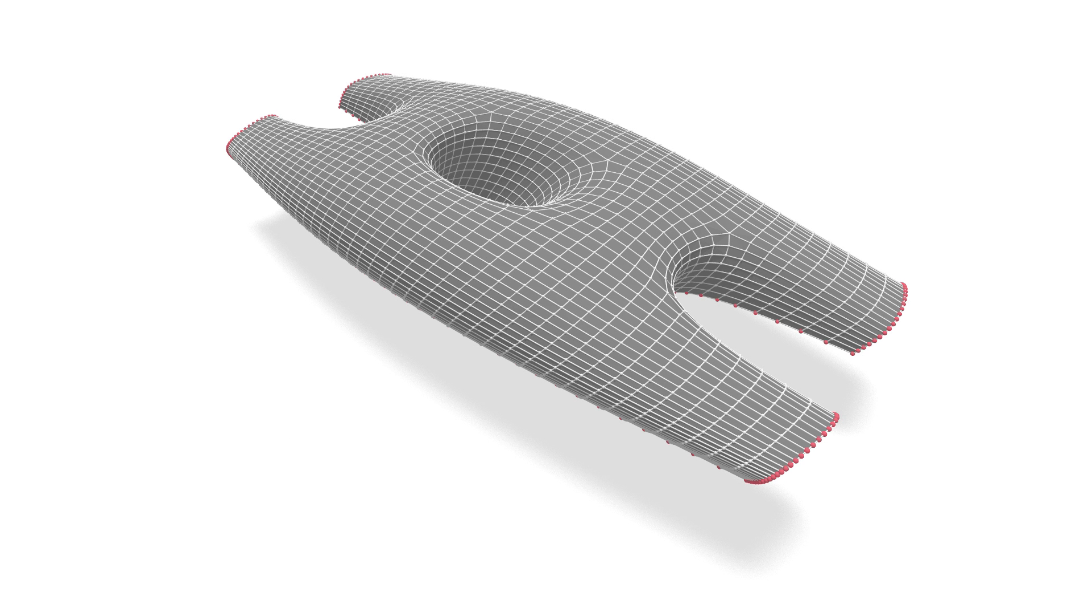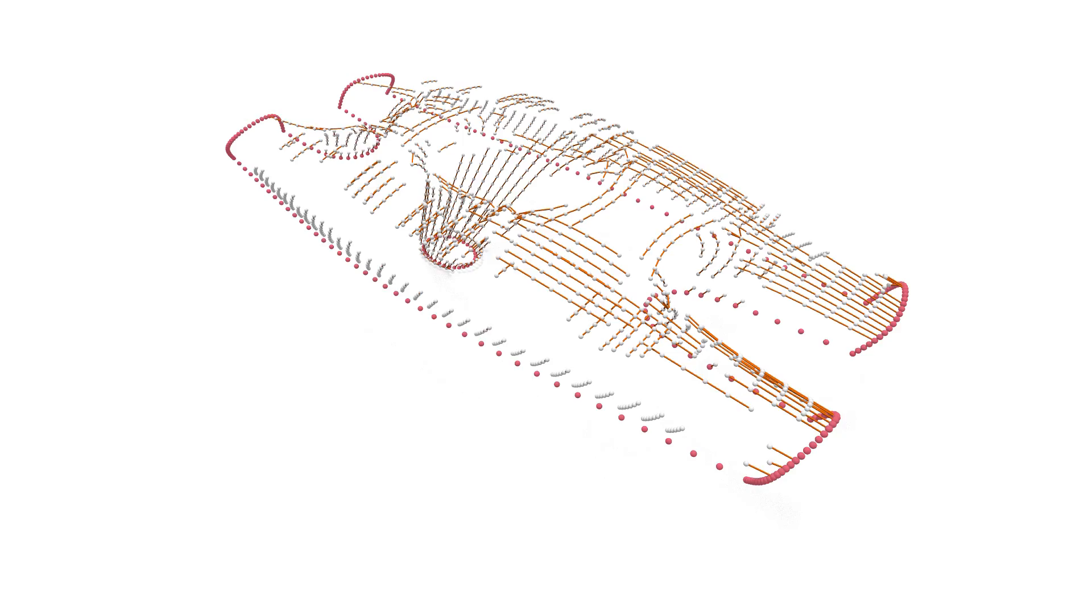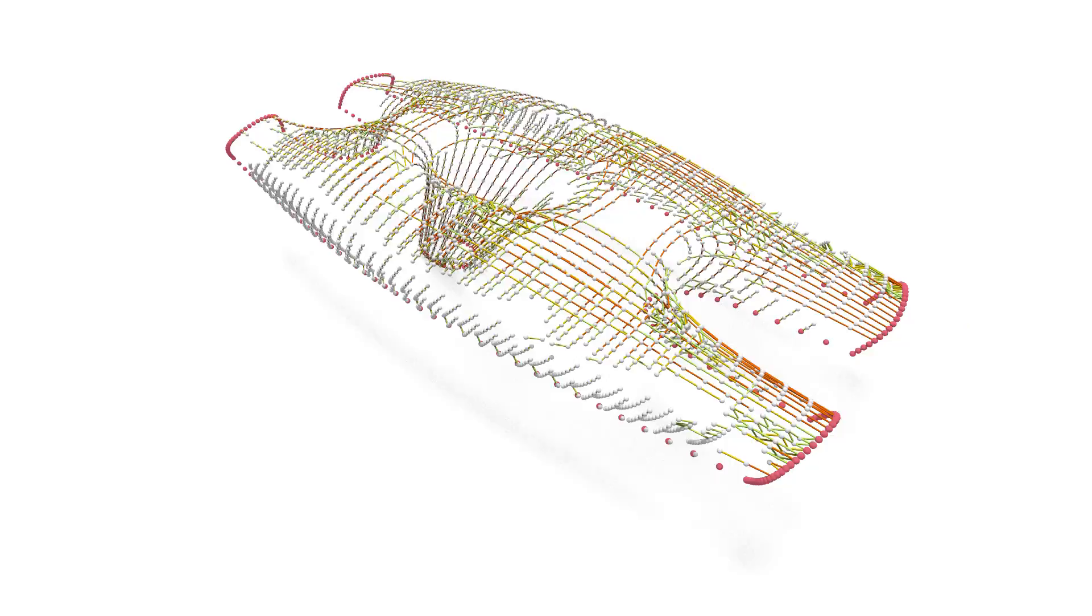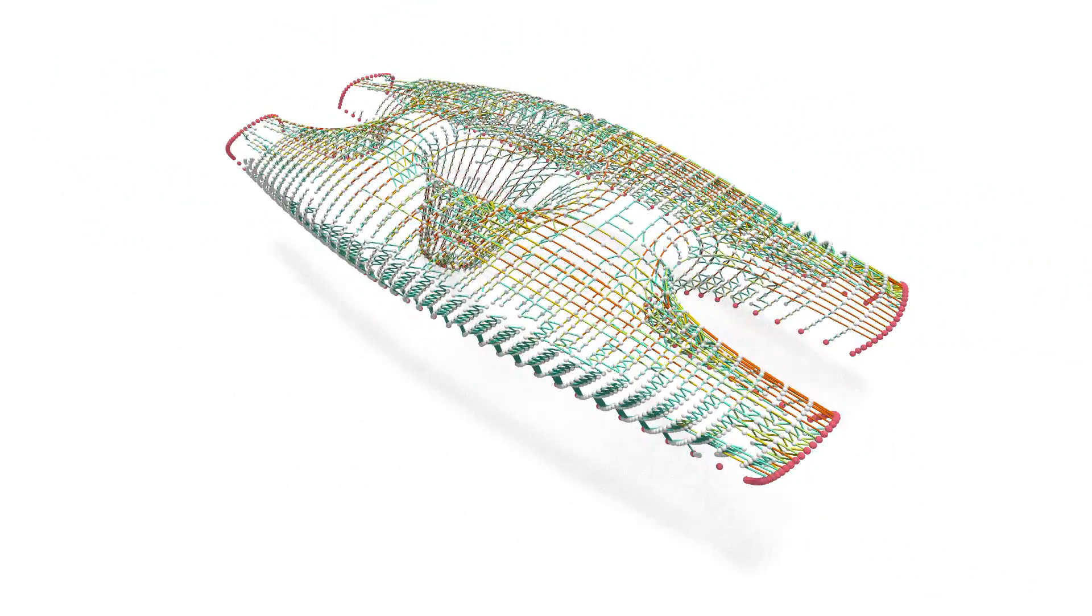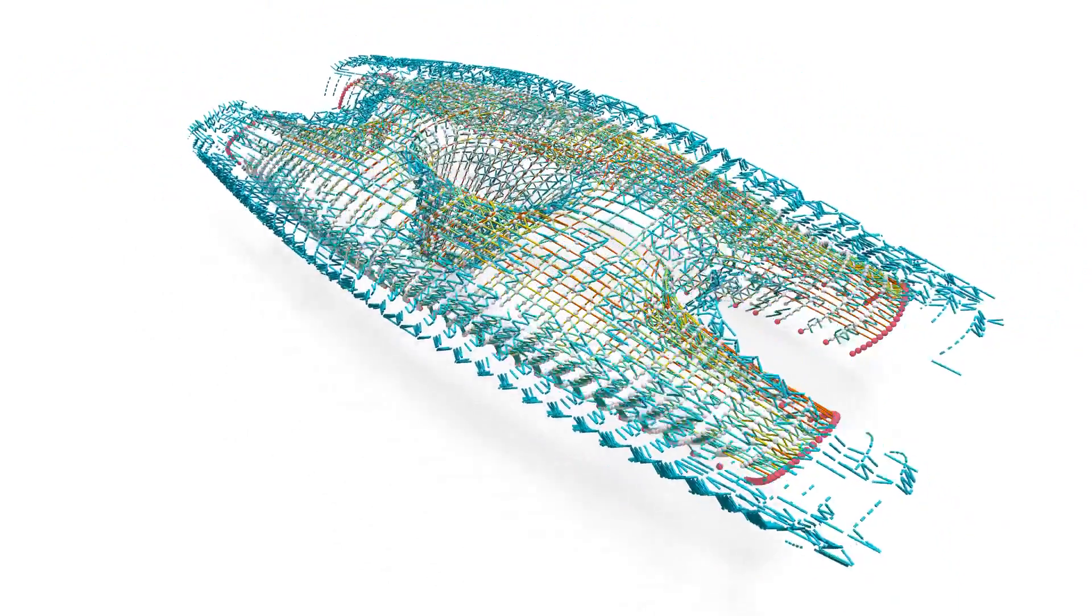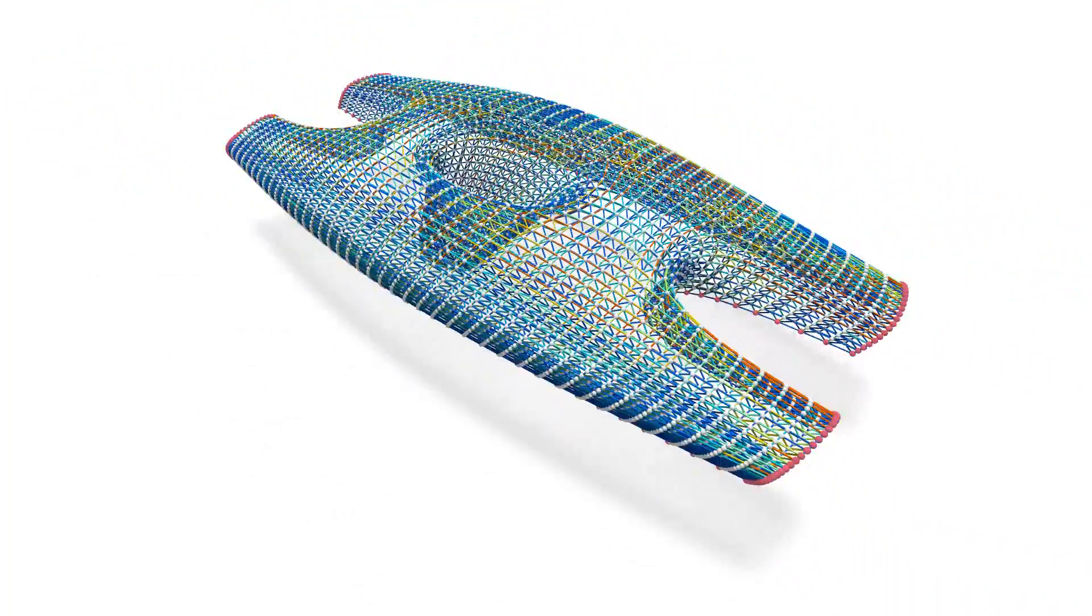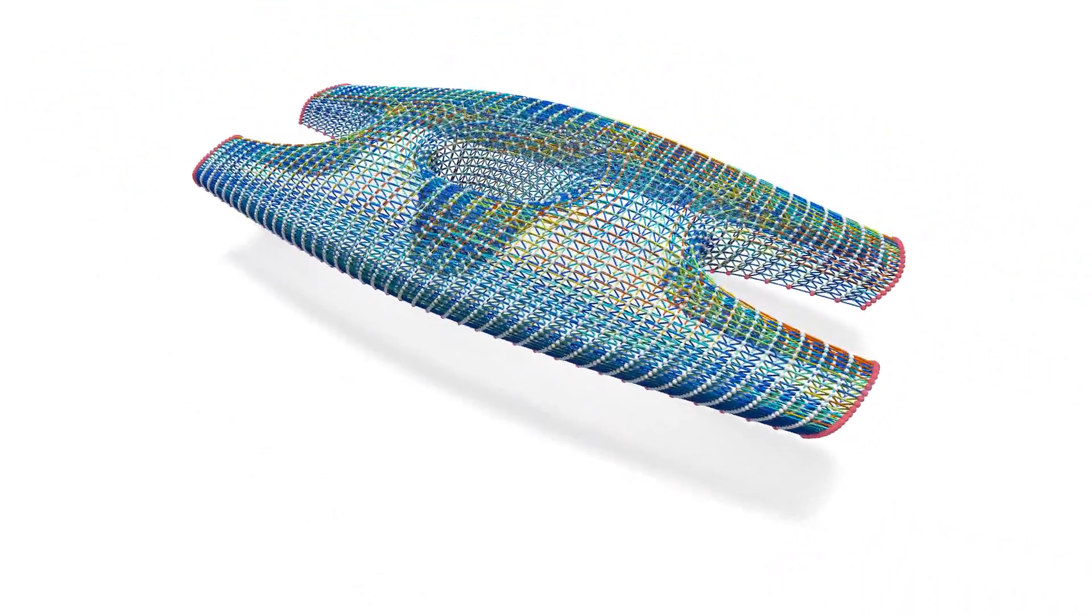Here we show another space structure design approximating the train station model constructed by six types of customized beams. The total volume of the material used is successfully reduced and the structure is statically sound.